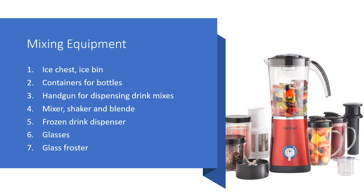Mixing equipment is known as a cocktail station, cocktail unit, beverage center, or jackie box. Pouring stations are equipped with an ice chest or ice bin, with or without bottle wells, and a speed rail attached to the front. Equipment includes a glass froster, glasses, frozen drink dispenser, mixer, shaker, blender, handgun for dispensing drink mixes, containers for bottles, and ice chest and ice bin.